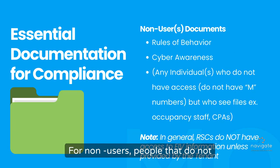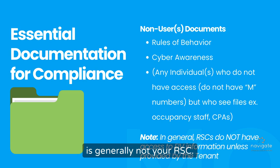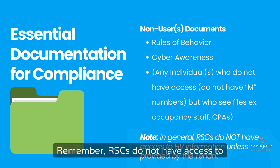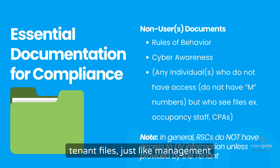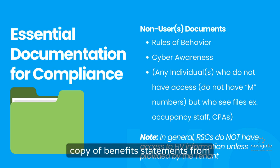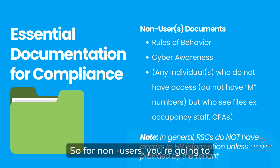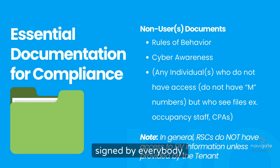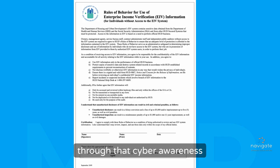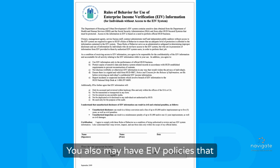For non-users — people that do not have M numbers — sometimes it's an administrative assistant who helps put together files but does not have access, or it could be an auditor. It is generally not your RSC. Remember, RSCs do not have access to tenant files, just like management personnel don't have access to RSC files. So if your RSC is looking to get a copy of benefits statements from EIV, that should be coming from the tenant. For non-users, you're going to be getting the rules of behavior signed by everybody, and they should also be going through the cyber awareness training. Those are going to be kept in the file. You also may have EIV policies that everyone signs.